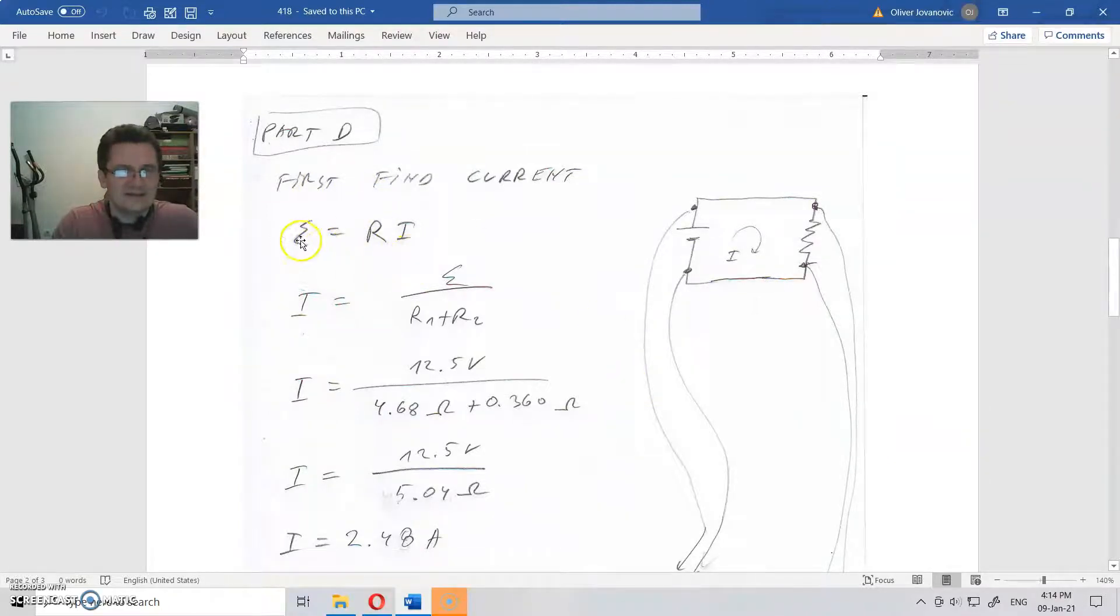Current is the voltage source divided by resistance. The resistance in this part is internal resistance plus that resistance in ohms. That is 12V, this is the resistance of the source, and this is the resistance of the resistor. We found a current of 2.48A that goes around here. That is the current.